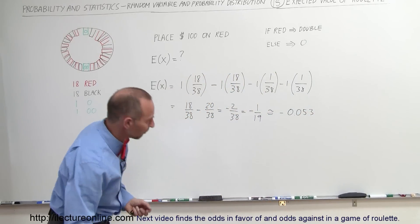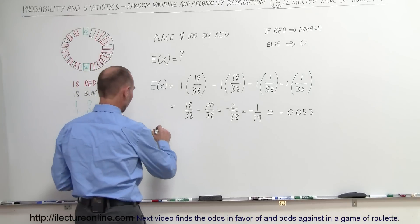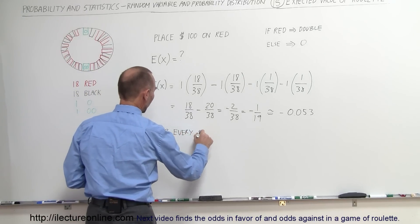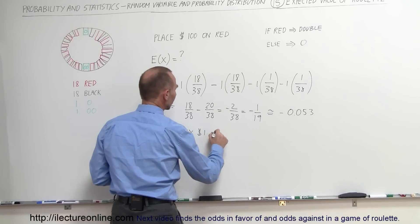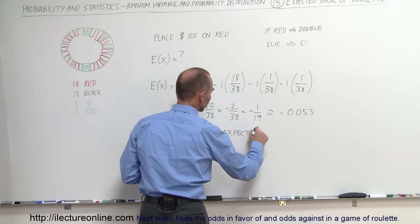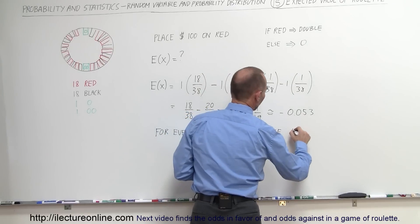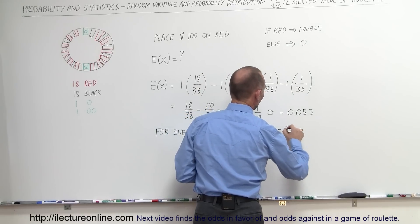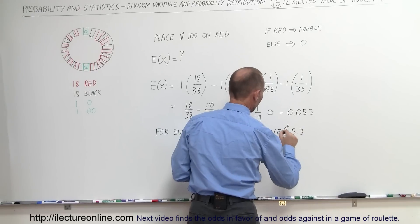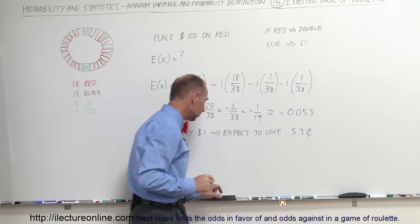Which means that for every dollar bet, so for every one dollar bet, you can expect to lose 5.3 cents. Let me make a cent symbol here, 5.3 cents and I think we put that on the back, don't we, there we go, 5.3 cents.